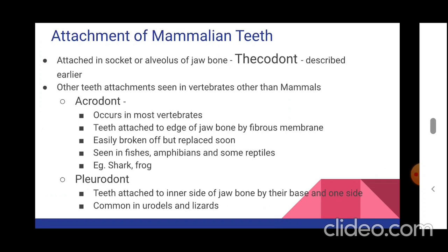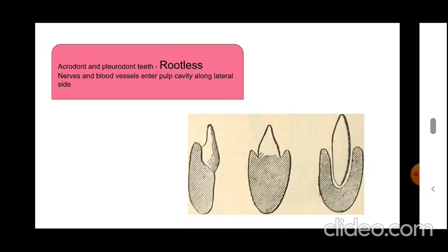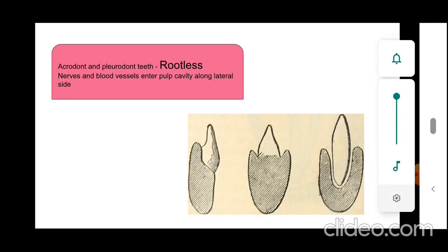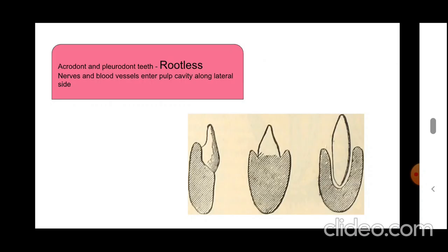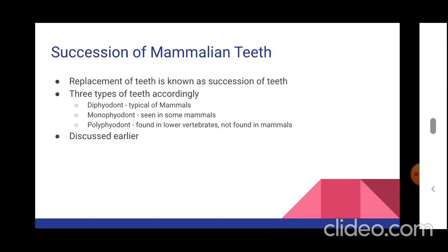In the pleurodont condition, teeth are attached to the inner side of the jawbone by their base and one side. It is common in snakes and lizards. Both acrodont and pleurodont teeth are rootless — the nerves and blood vessels enter the pulp cavity along the lateral side. A picture shows the three attachments: pleurodont, acrodont, and thecodont.